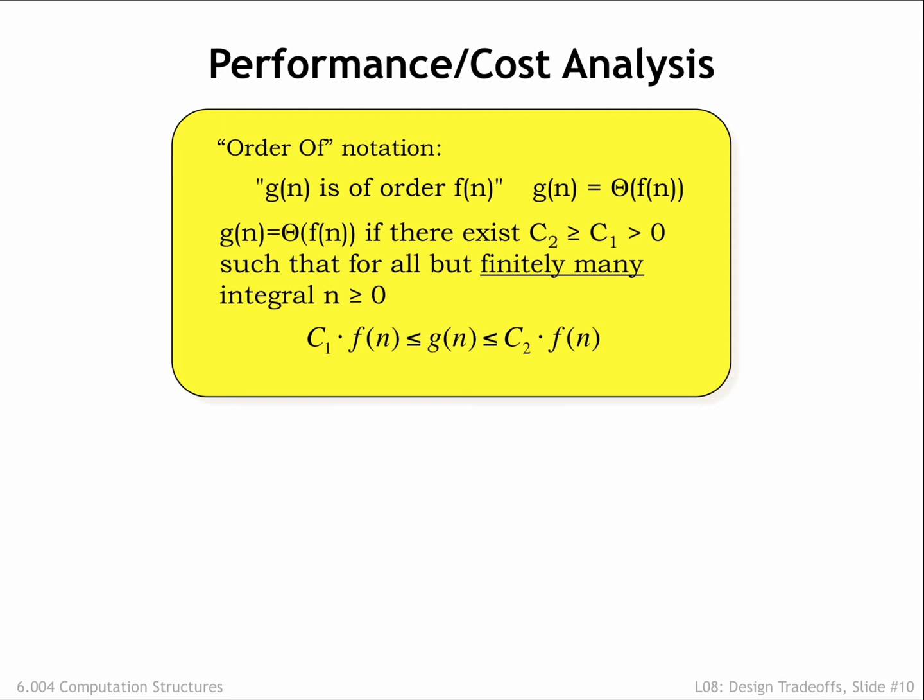The yellow box contains the official definition, but an example might make it easier to understand. Suppose we want to characterize the growth in the value of the equation n² + 2n + 3 as n gets larger. The dominant term is clearly n², and the value of our equation is bounded above and below by simple multiples of n², except for finitely many values of n.